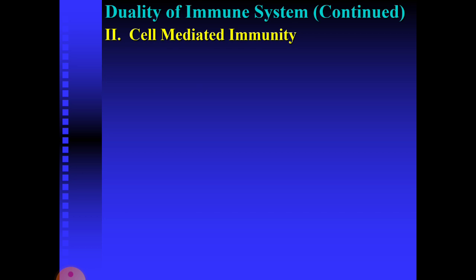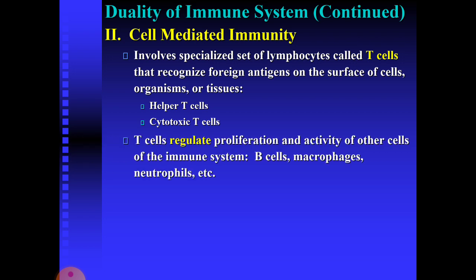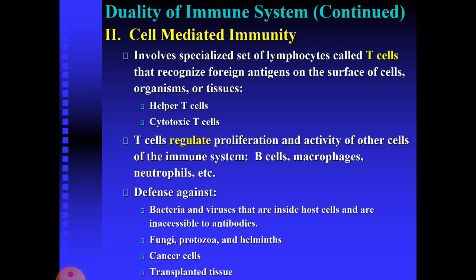Moving on to the second type of immune response — cell-mediated immunity. It involves a specialized set of lymphocytes called T cells that recognize foreign antigens on the surface of cells, organisms, or tissues. It involves two types: helper T cells and cytotoxic T cells. T cells regulate proliferation and activity of other cells of the immune system like B cells, macrophages, and neutrophils. Cell-mediated immunity acts as a defense against bacteria and viruses that are inside host cells and inaccessible to antibodies, as well as fungi, protozoa, helminths, cancer cells, and transplanted tissues.